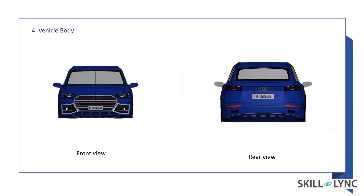The vehicle body is the most complex part of the project. Boss Extrude, Cut Extrude, Cut Revolve, Cut Pattern, and Dome features were most commonly used. The vehicle body accommodates all other components and has a sloping or truncated rear roofline, which is why it is referred to as a coupe-style car.